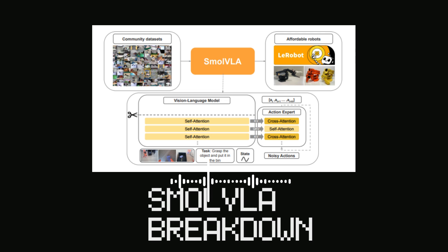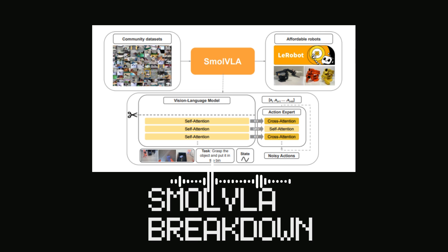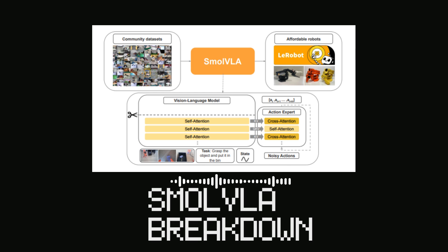That sounds like a big deal, because a lot of the existing VLA models are just massive — billions of parameters, super expensive to train and deploy in the real world. Exactly. That's one of the core problems Smol VLA is trying to solve. These huge models are a barrier, and it's not just the size — it's also about the data they use. Most of them rely on academic or industrial datasets, which ignores the growing amount of community-collected data from more affordable robotic platforms.